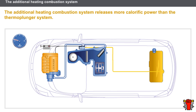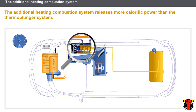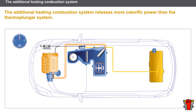Let us now look at the additional heating combustion system. Like the thermo plunger system, the additional heating combustion system affects the coolant circuit. It relays more calorific power than the thermo plunger system, which enables the coolant temperature to rise more quickly. The additional heating combustion system is automatically activated and operates depending on certain criteria. It is fitted in series to the engine coolant circuit between the cylinder head and the heater matrix.